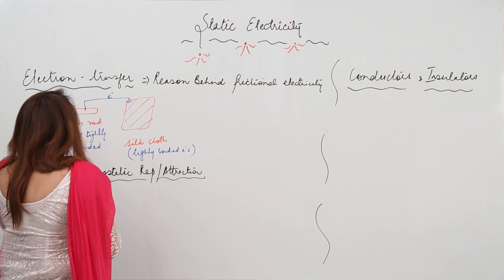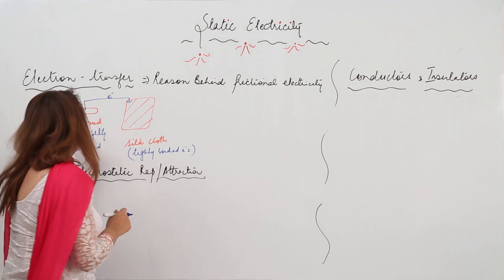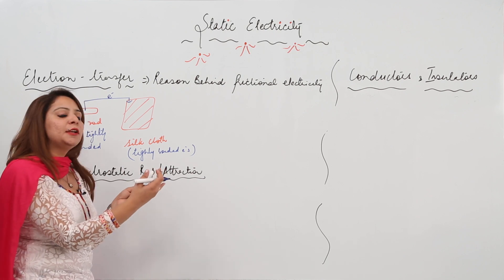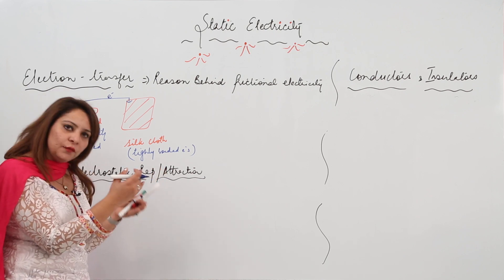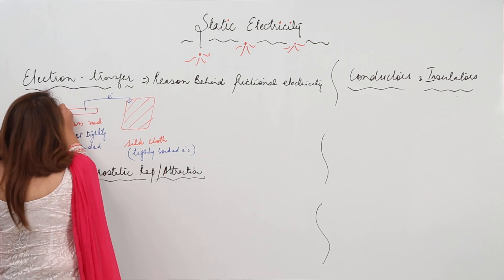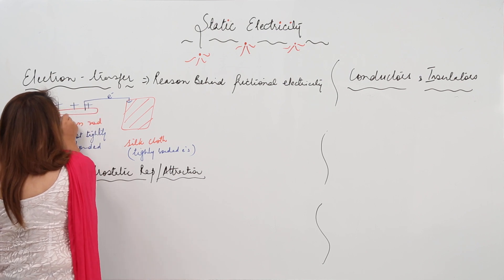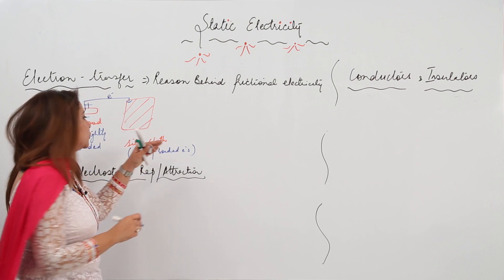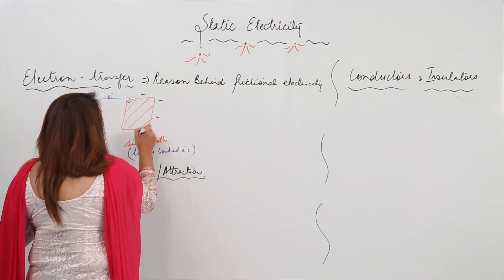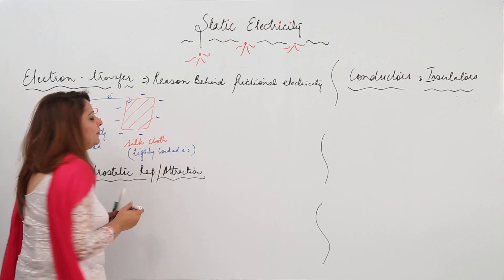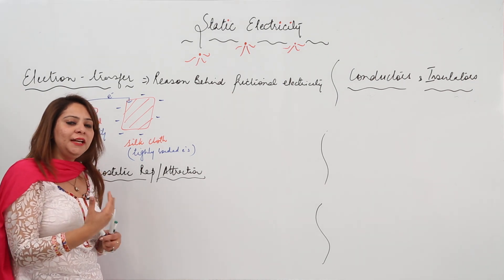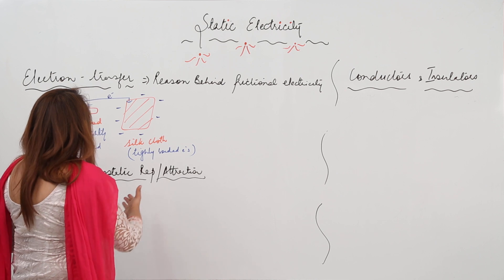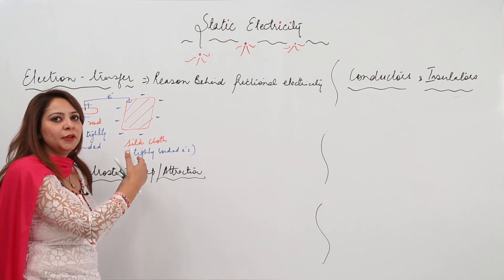When we rub the glass rod with silk cloth, because electrons are not tightly bound in glass, electrons get transferred from glass rod to silk cloth. As a result, the atoms of glass rod will not remain neutral — positive charge exceeds, so the glass rod acquires a positive charge. Because silk cloth is gaining electrons, it acquires a negative charge.